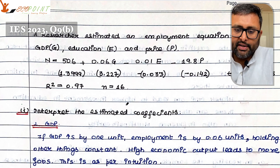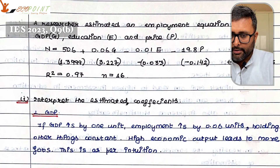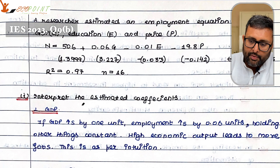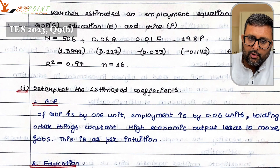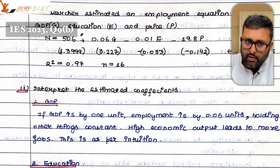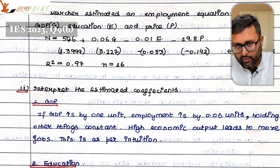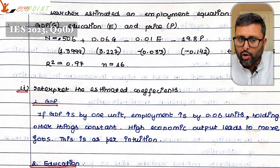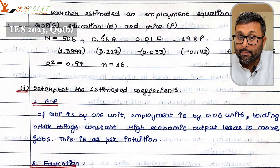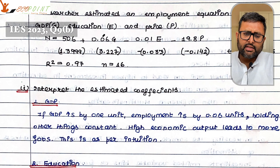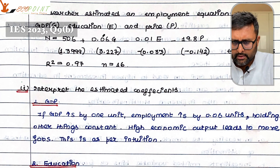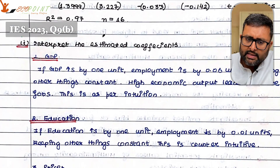The first question says to interpret the estimated coefficients. Look at GDP first. If GDP increases by one unit — there are no units given — employment increases by 0.06 units, keeping other things constant. This seems reasonable because if there is an increase in economic output, then employment is going to increase. So this is completely as per intuition.